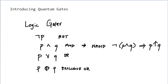Essentially, these are our primary logic operators. These operators allow us, one, to make some change to the overall defined value of our statements, and two, to define relationships between our overall statements. Now, the question is how does this relate to classical computers? We define this as a major part of classical logic gates.